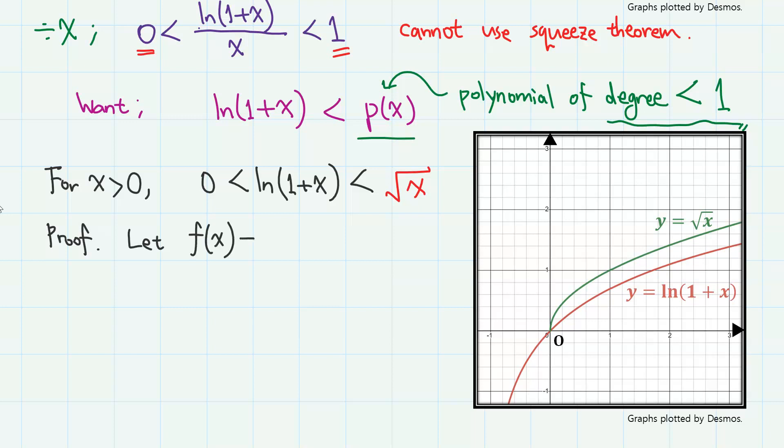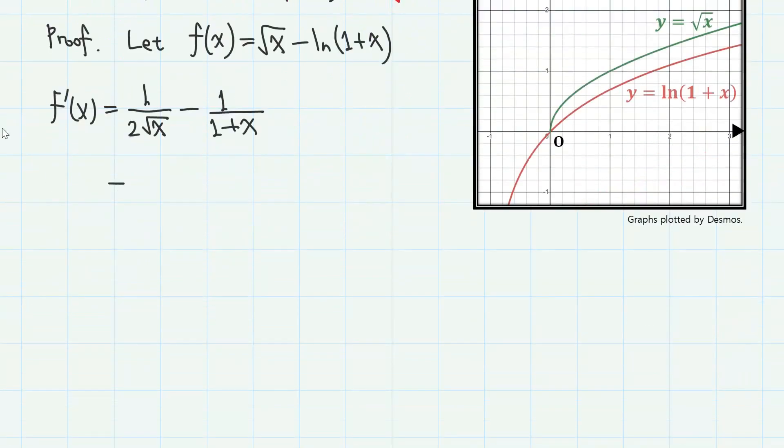To prove this, let function f(x) as square root of x minus ln(1 + x). Then, the derivative is given as 1 over 2 times square root of x minus 1 over 1 plus x, which is (1 + x - 2√x) over (2(1 + x)√x).